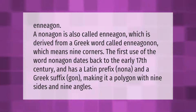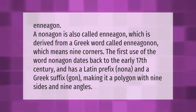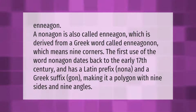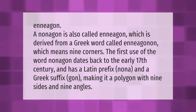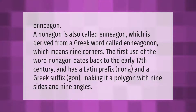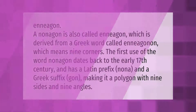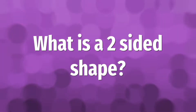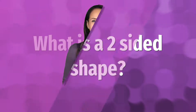A nonagon is also called an enneagon, which is derived from a Greek word called enneagonon, meaning nine corners. The first use of the word nonagon dates back to the early 17th century and has a Latin prefix nona and a Greek suffix gon, making it a polygon with nine sides and nine angles.